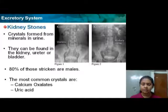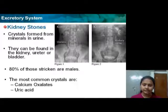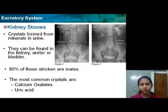Now we'll be talking about kidney stones. These are crystals formed by minerals in urine. They can be found in the kidney, ureter, or bladder. Eighty percent of those affected are males.